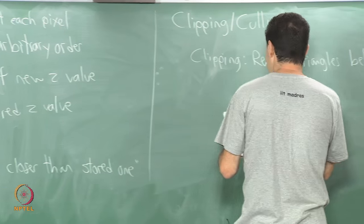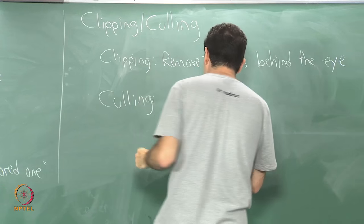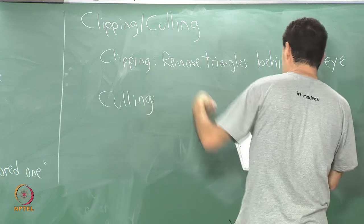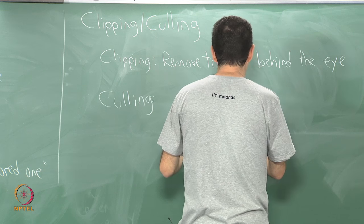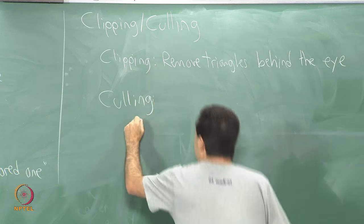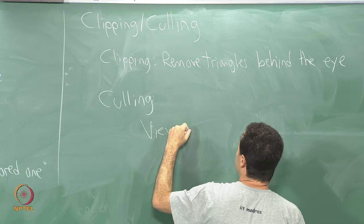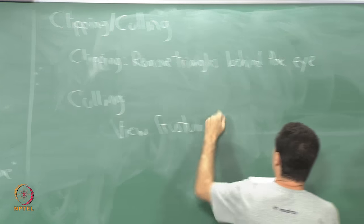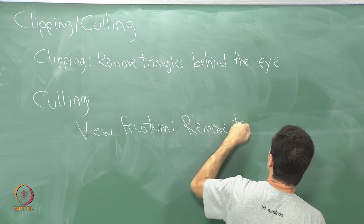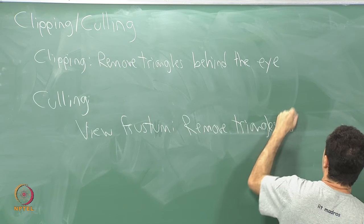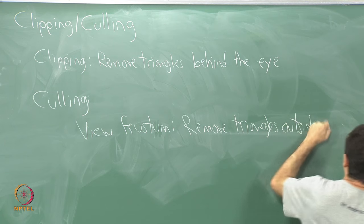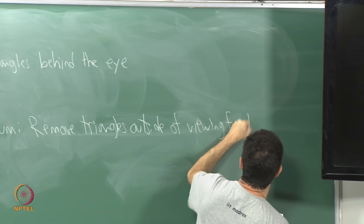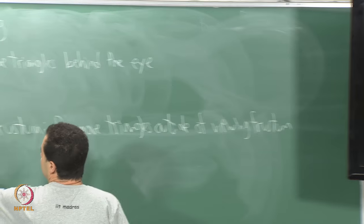More complicated kinds of culling operations: the remaining part of clipping is to cull or clip away everything outside of the viewing frustum. You might remember the frustum from our transformation discussions. So one kind of culling is: remove triangles outside of the viewing frustum.